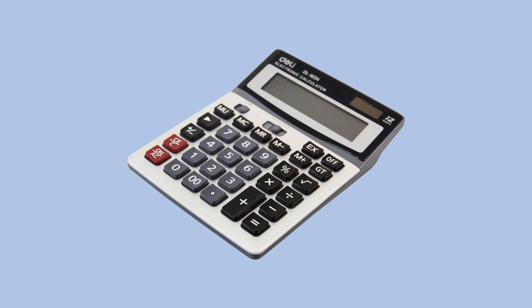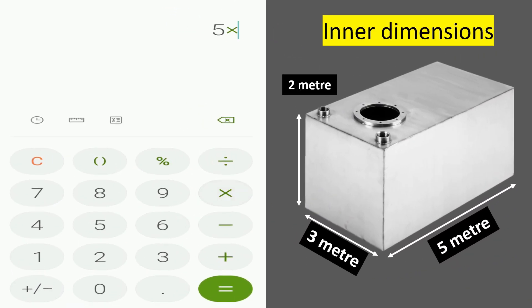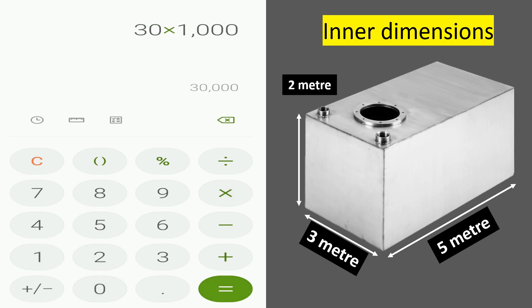Using the same formula, let us check this in our calculator: 5 into 3 into 2 equals 30; 30 into 1000 equals 30,000, which is 30,000 liters.